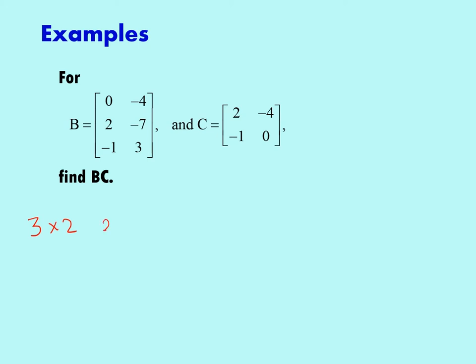We do have the number of columns in the first matrix the same as the number of rows in the second matrix. The resulting matrix will be given by these outside numbers: the number of rows in the first matrix by the number of columns in the second matrix. So the result will be a 3 by 2 matrix.